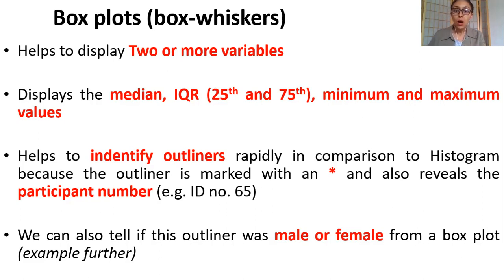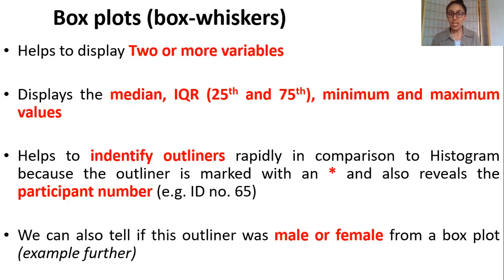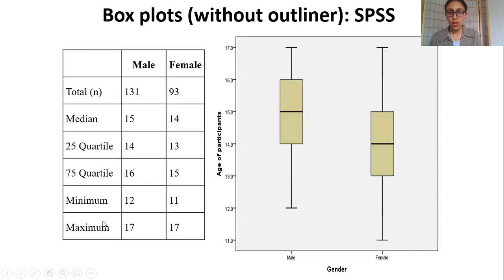Box plots are excellent for identifying outliers because they give you the exact case number, which bar charts or other graphs don't. For the example box plot showing males and females with 131 males and 93 females, the thick line in the center of each box is the median. For males, the median age is 15. The x-axis shows males and females; the y-axis shows age of participants. The box boundaries represent the 25th and 75th percentile interquartile range.